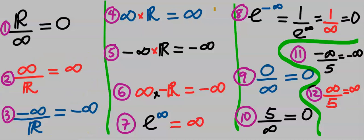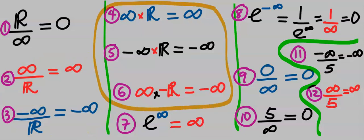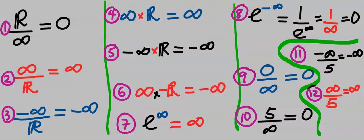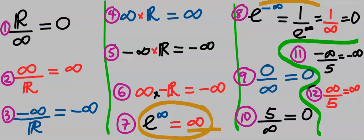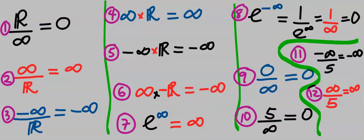If infinity multiplies any number, it reduces to infinity — and you need to consider whether either the infinity or the number is negative. Subsequently, e to the power of infinity is infinity, but e to the power of negative infinity is zero. Always remember these concepts.